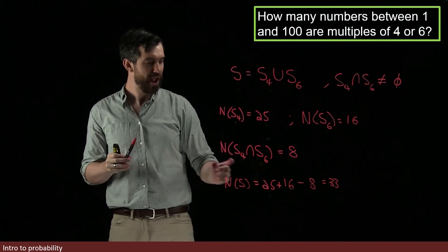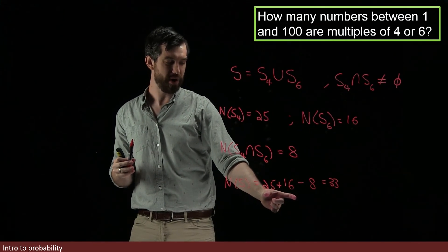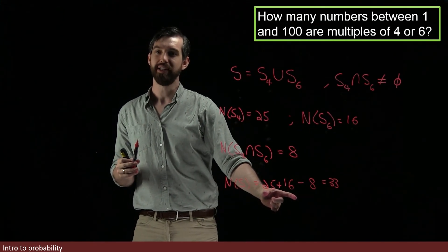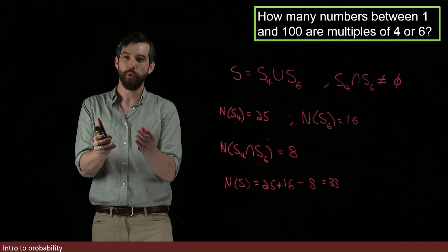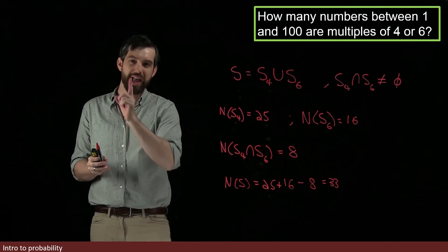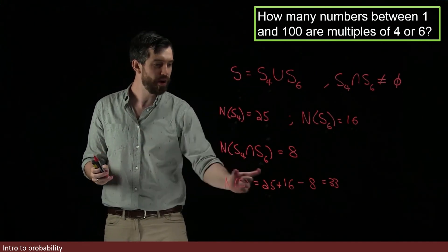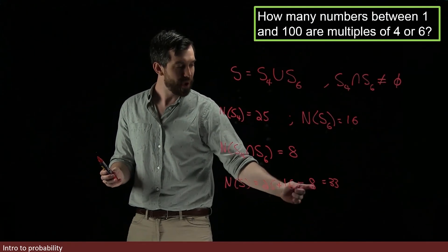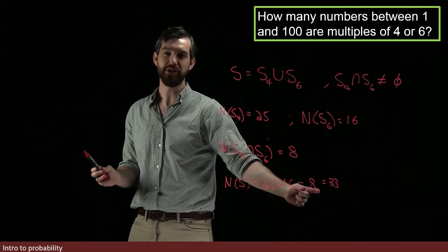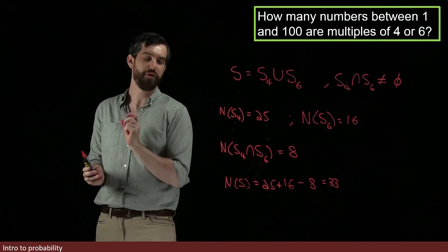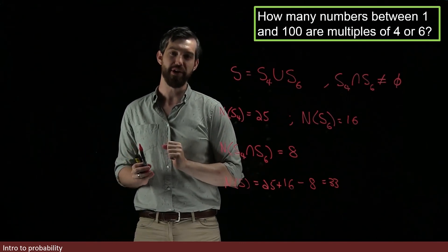There are a total of 33 numbers here that have either property, that are either a multiple of 4 or a multiple of 6. If we only computed the 25 and the 16, we would have double counted the ones in the intersection. The ones that were both a multiple of 4 and a multiple of 6, we would have counted them twice. And so, I have to subtract off by the intersection to make sure that I only count them once and this gives me my final value of 33.